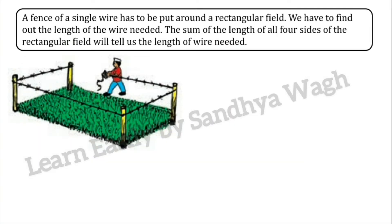A fence of a single wire has to be put around a rectangular field. We have to find out the length of the wire needed. The sum of the length of all 4 sides of the rectangular field will tell us the length of wire needed.